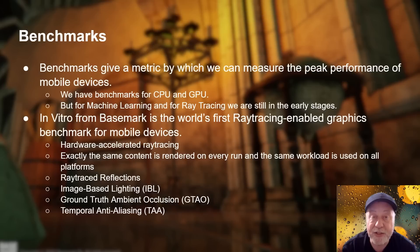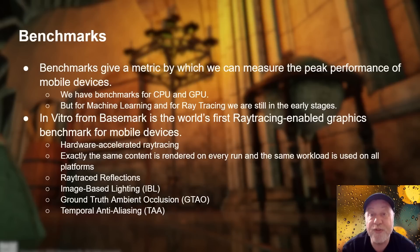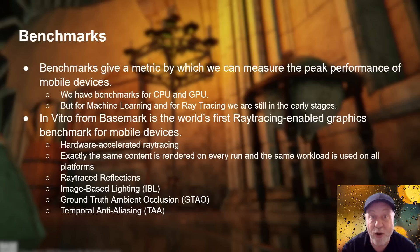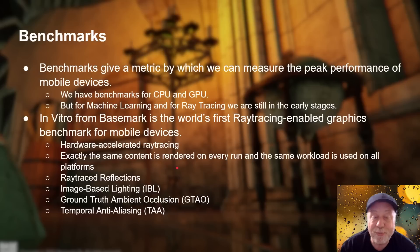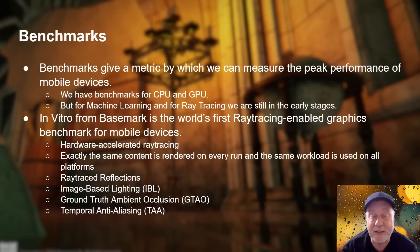BaseMark, a company that makes benchmarks for both CPU and GPU, now has a ray tracing benchmark called Vitro. It's the world's first ray tracing enabled benchmark and it tests hardware-accelerated ray tracing. Exactly the same content is used on every single run and the same workload is applied on every platform. It covers ray trace reflections, image-based lighting, ground truth, ambient occlusion, and temporal anti-aliasing — essentially all the bases from a graphics point of view.